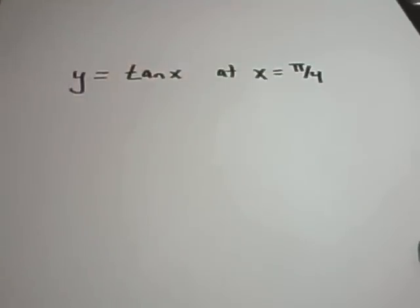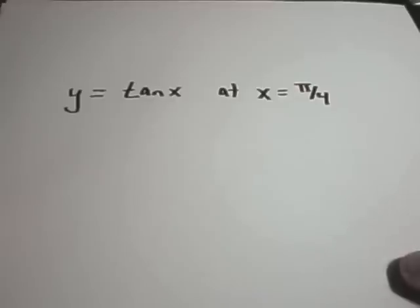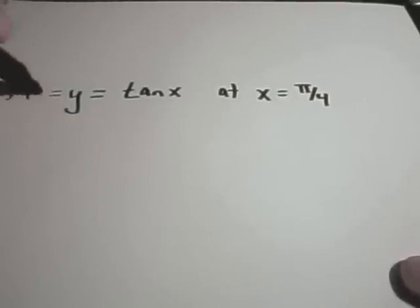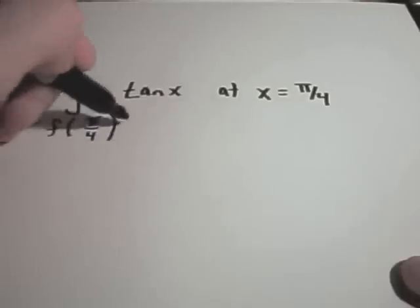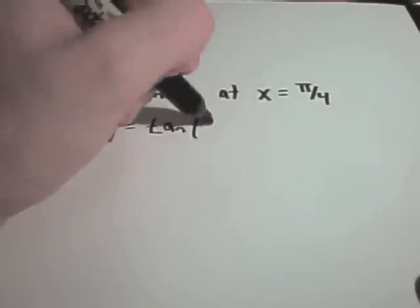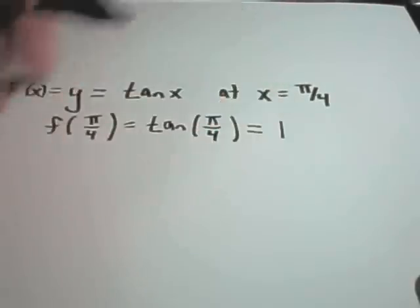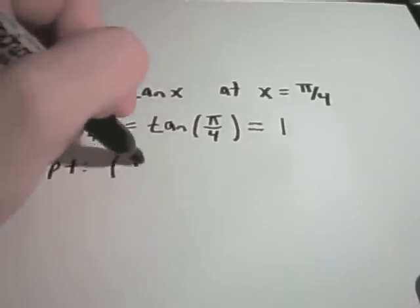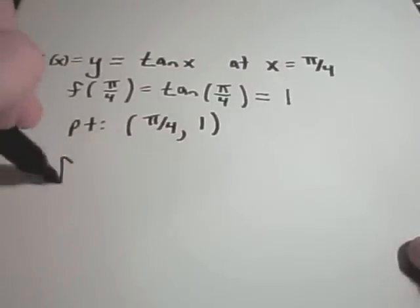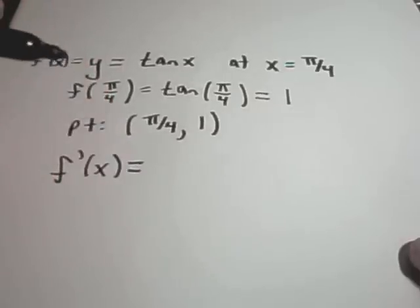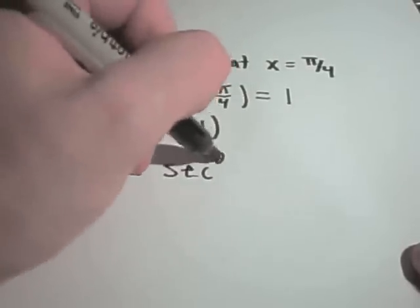Suppose we want to find the equation of the tangent line to the graph y equals tangent of x at the x-coordinate of pi over 4. They don't give us the y-coordinate, but we can figure it out by plugging pi over 4 into the function. f(pi/4) equals tangent of pi over 4, which turns out to be 1. So the point is (pi/4, 1).